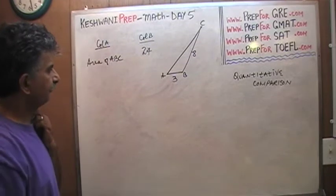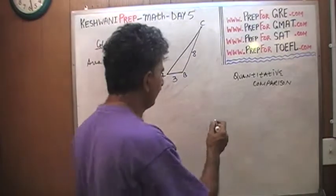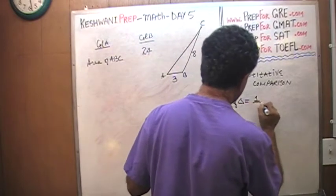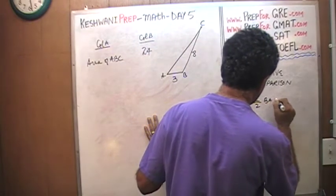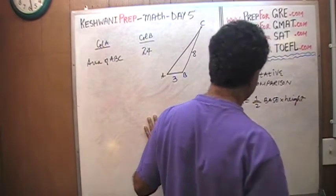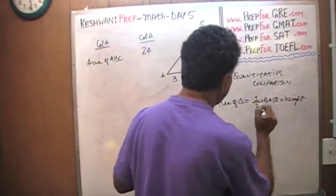That was it. Let's solve it together. How do you find the area of a triangle? Area of a triangle is one half base times height.